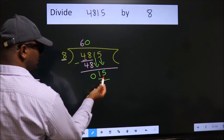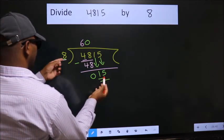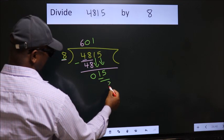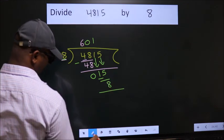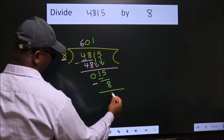So, 15. A number close to 15 in the 8 table is 8 once 8. Now we subtract. We get 7.